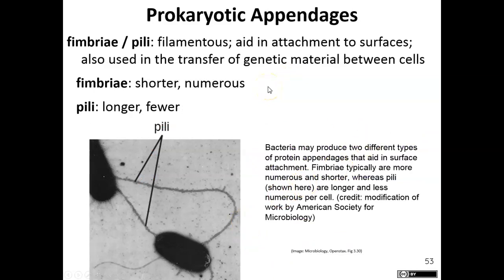Fimbriae and pili are structures that aid in attachment to surfaces. Fimbriae are shorter but more numerous. When a fimbria is long it is known as a pilus — they are the same structure, just the longer ones are called pili. One specific type of pilus is the sex pilus, which allows bacteria to attach to one another and share genetic information — something we'll cover in the genetics portion.